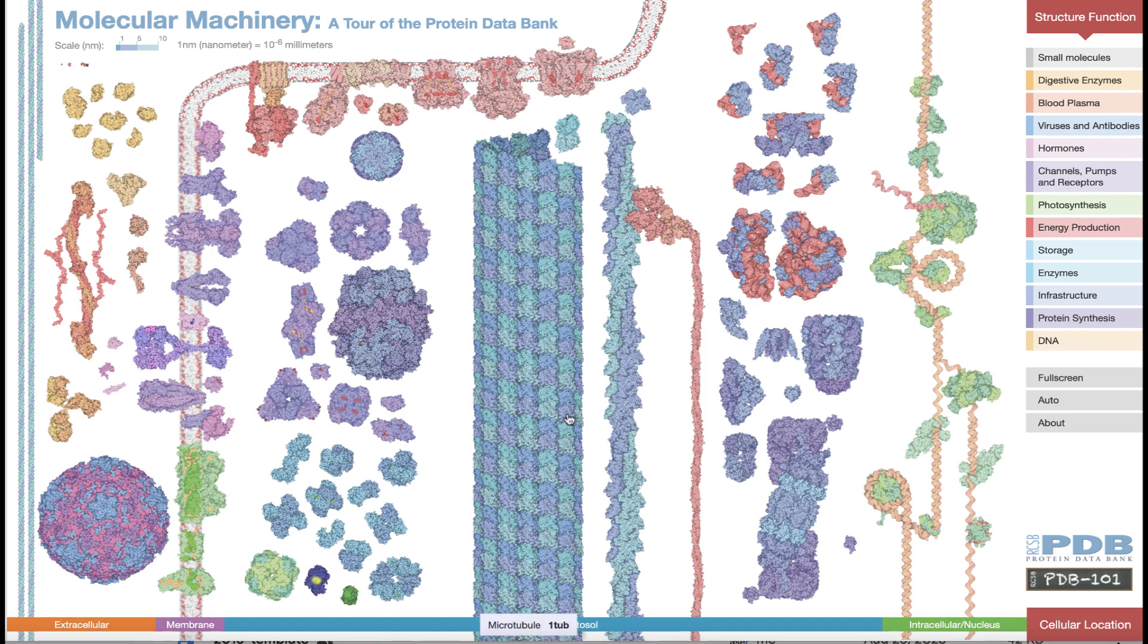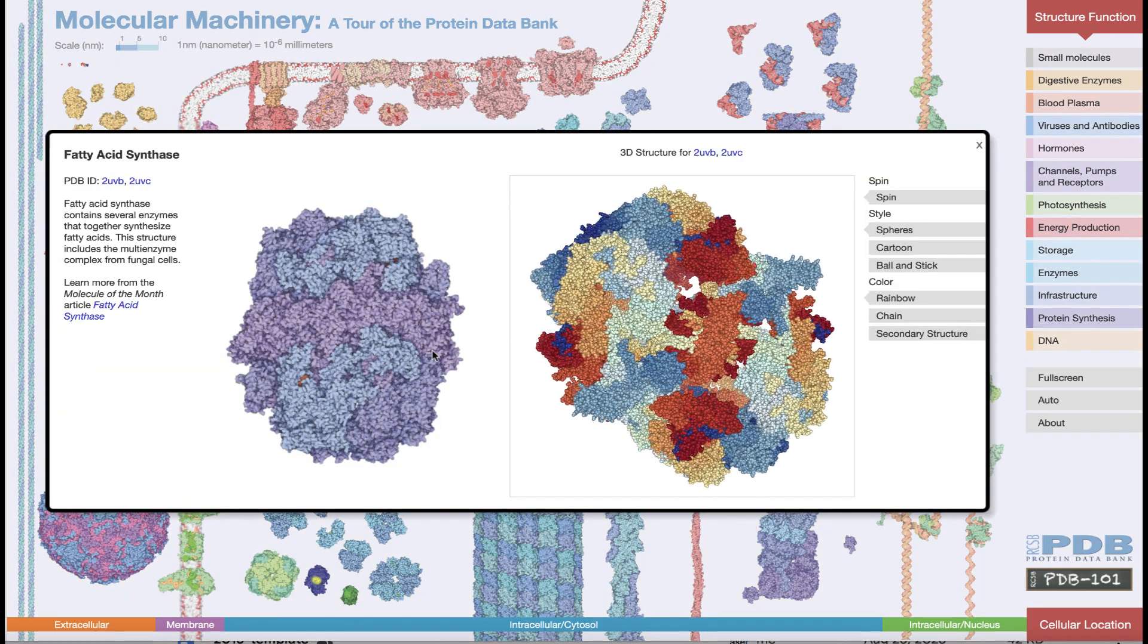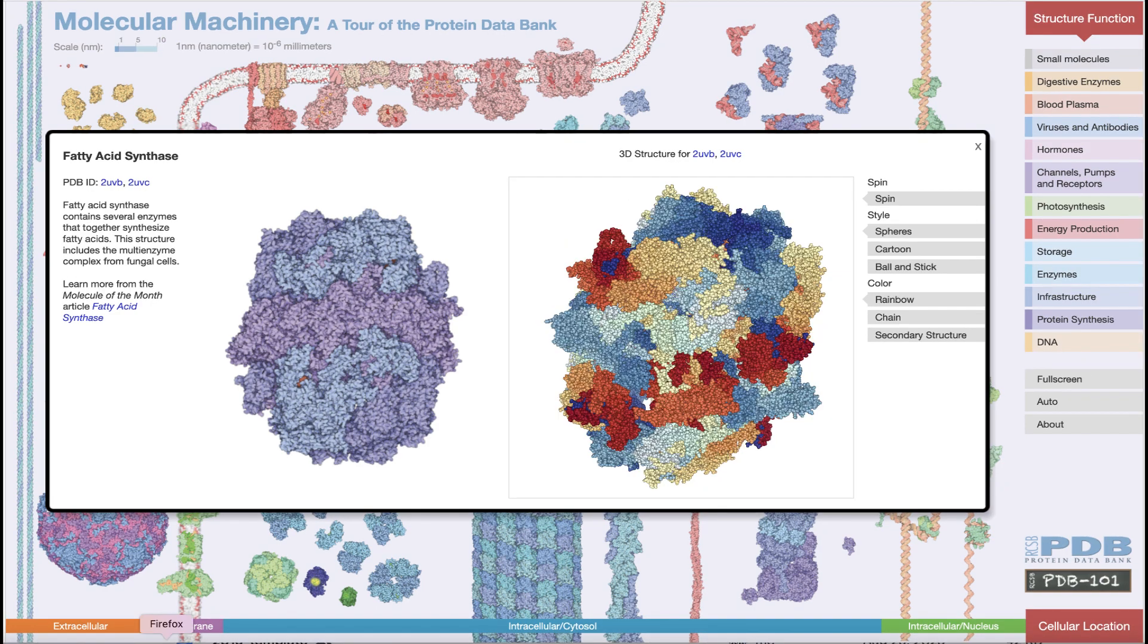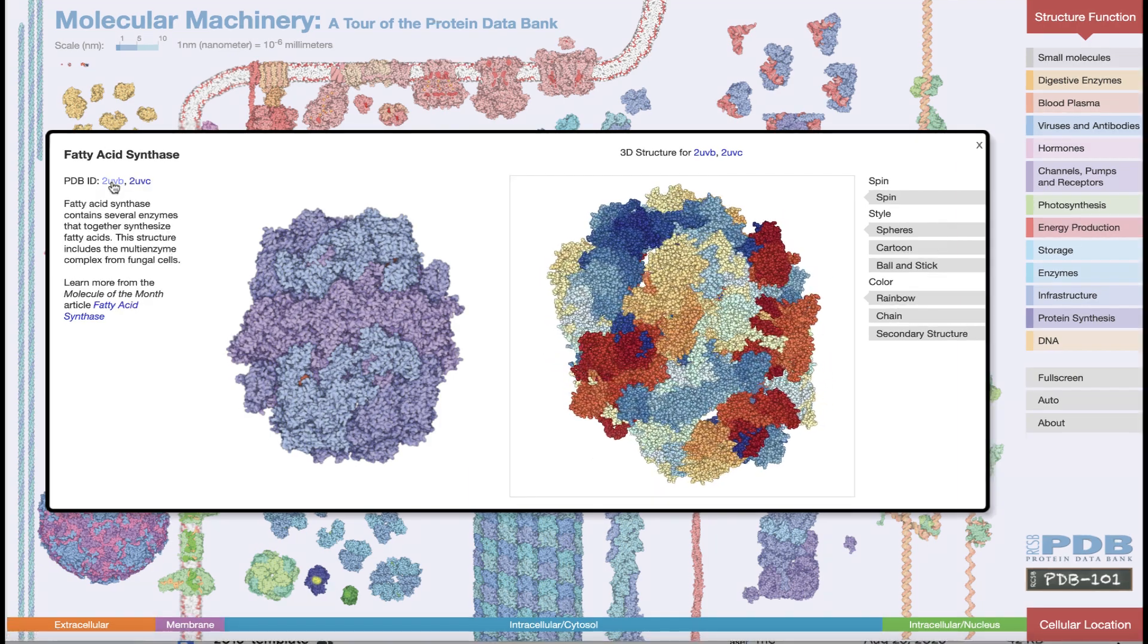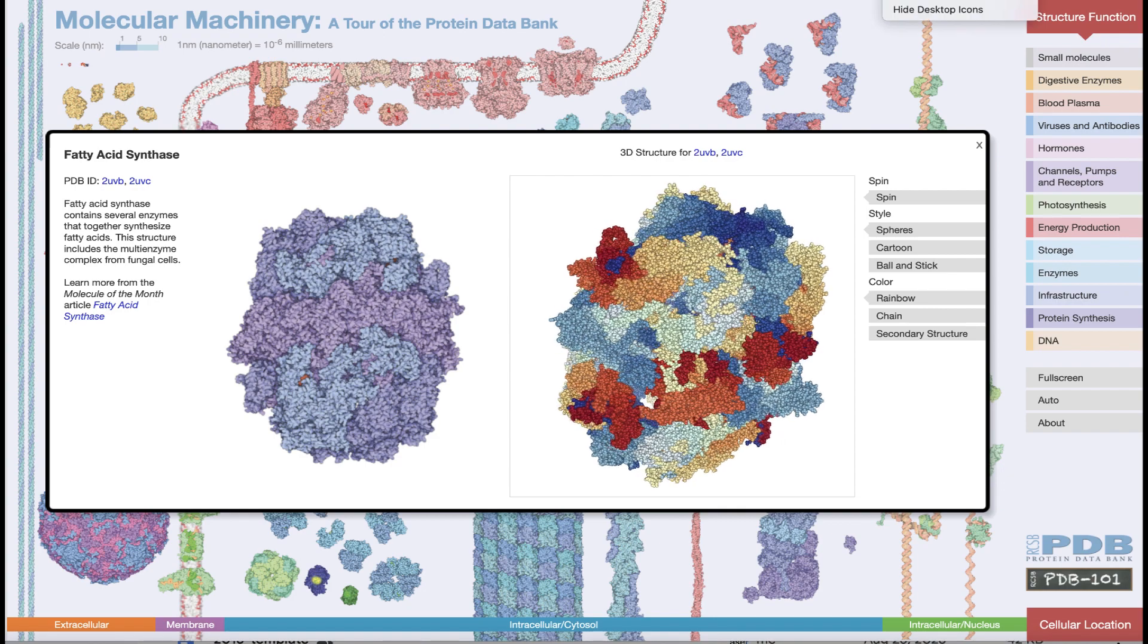You can select a structure and visualize it interactively in 3D using Protein Viewer. You can also read a brief summary of the molecule's biological role, access the corresponding PDB entry, and the molecule of the month column where available.